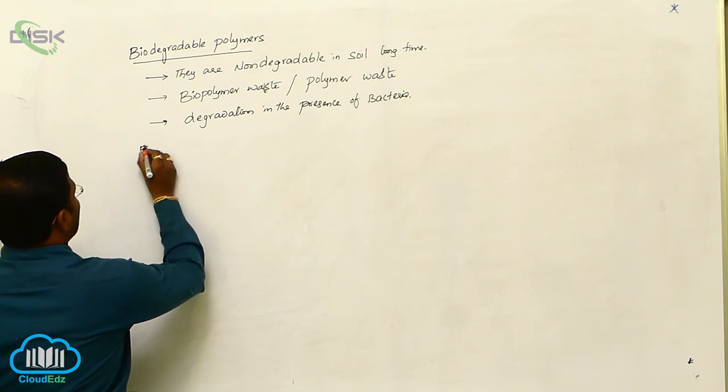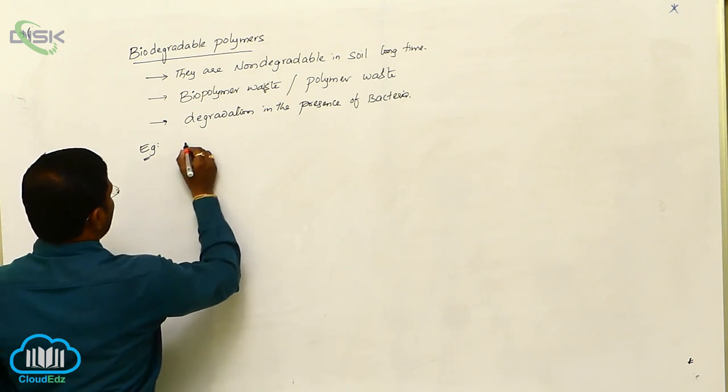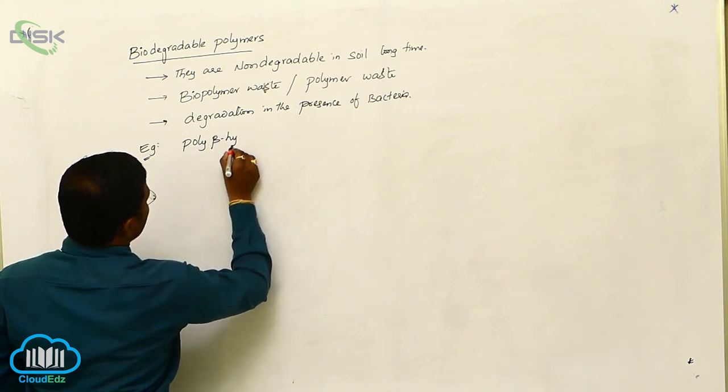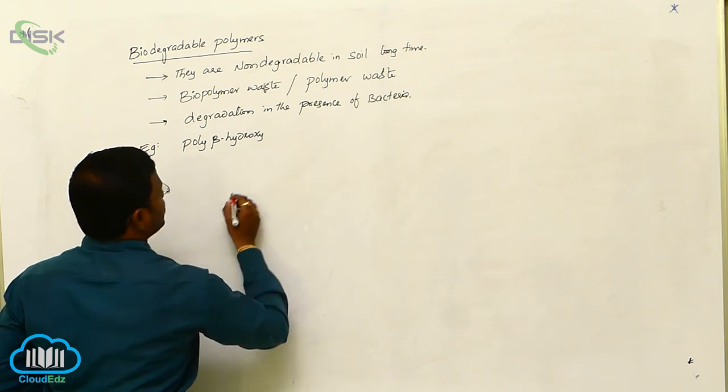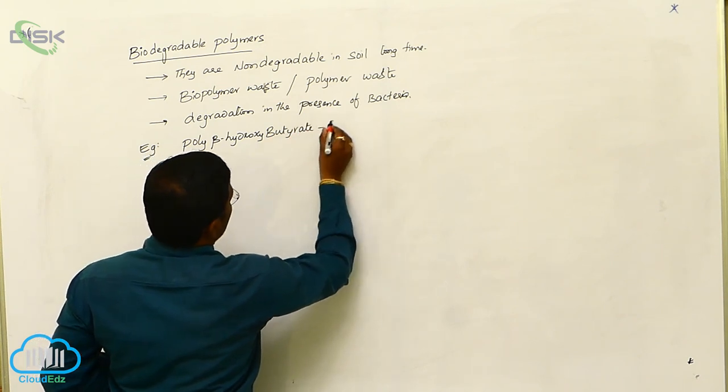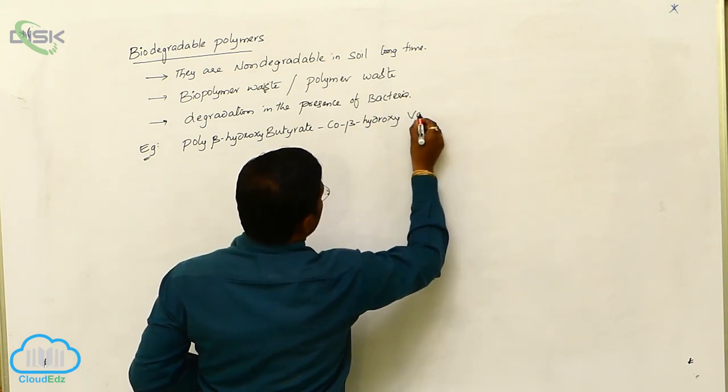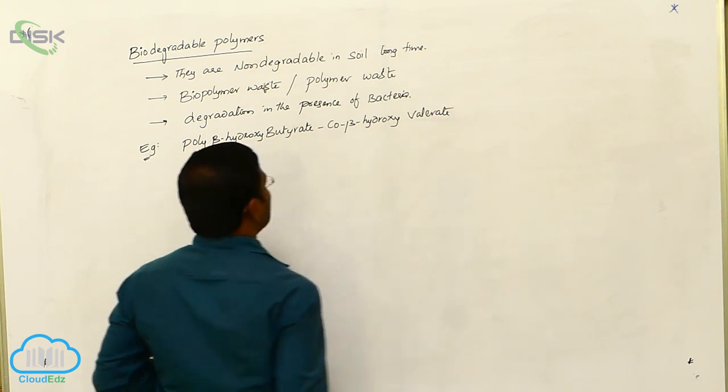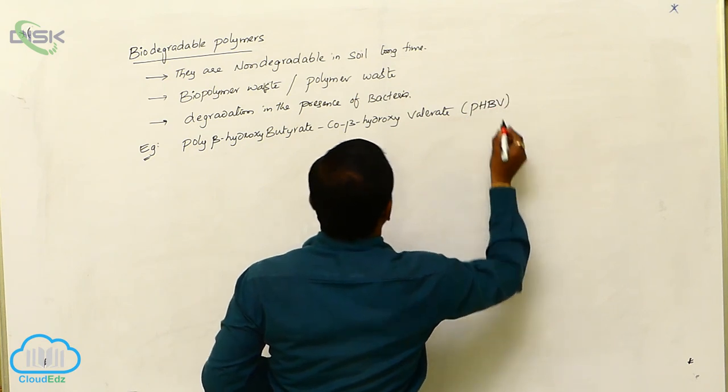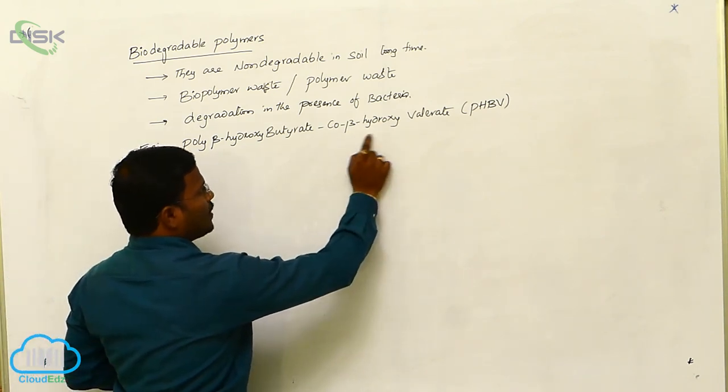Examples of biodegradable polymers developed by scientists include poly-beta-hydroxybutyrate-co-beta-hydroxyvalerate. It is also called PHBV.